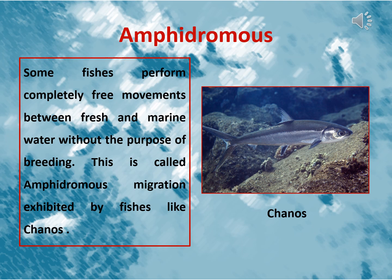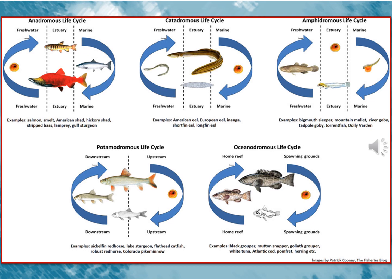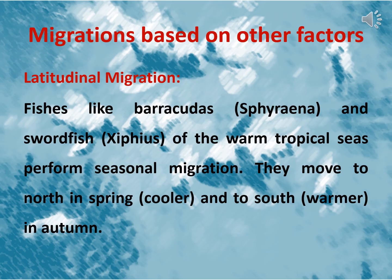Some fishes perform completely free movements between fresh and marine water without the purpose of breeding. This is called Amphidromus migration. It is exhibited by fishes like channids. Here is a slide showing you different types of migration in diagram. You can also see the examples of different types of migratory fishes. Migration is based on other factors too, like some fishes of the warm tropical seas perform seasonal migration. They move north in spring, that is to a cooler region.